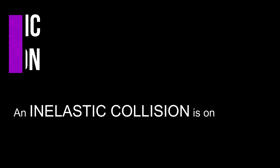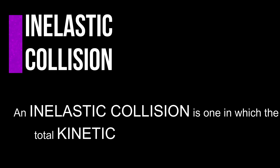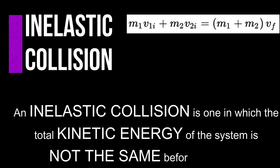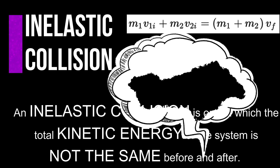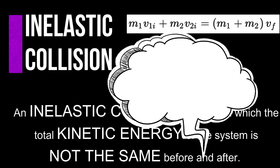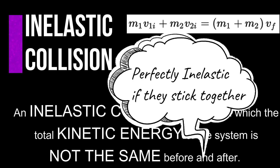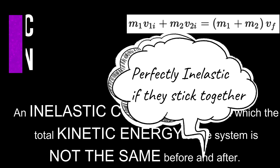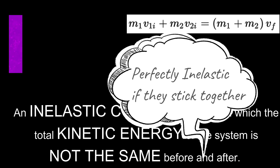An inelastic collision is one in which the total kinetic energy of the system is not the same before and after the collision. The equation we have is that the momentum of the first ball initial plus the momentum of the second ball initial equals the sum of the masses times the final velocity. That is for a perfectly inelastic collision, which means the two objects stick together and travel with the same final velocity.